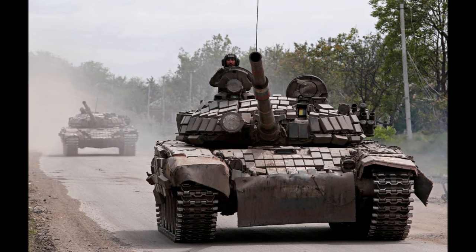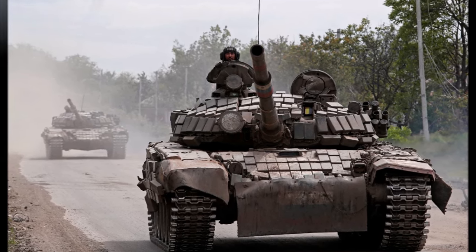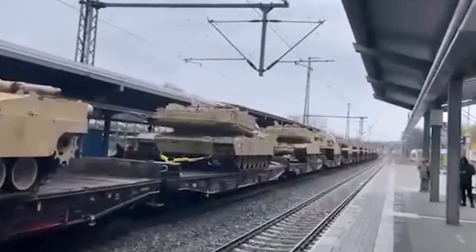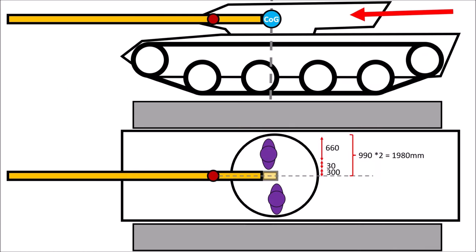In order to reduce ground pressure, we now want to make the chains as wide as possible. But the limitation here is the ability to transport the tank with trucks and trains. On the other hand, the chains cannot be positioned closer to the center because we have a fixed turret diameter.